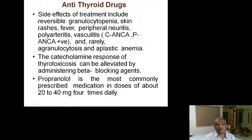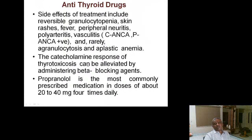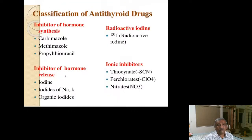The catecholamine response of thyrotoxicosis can be controlled by adrenergic beta-blocking agents, mainly propranolol at 20–40 mg four times daily. This addresses tachycardia, tremor, and all cardiac side effects of hyperthyroidism.